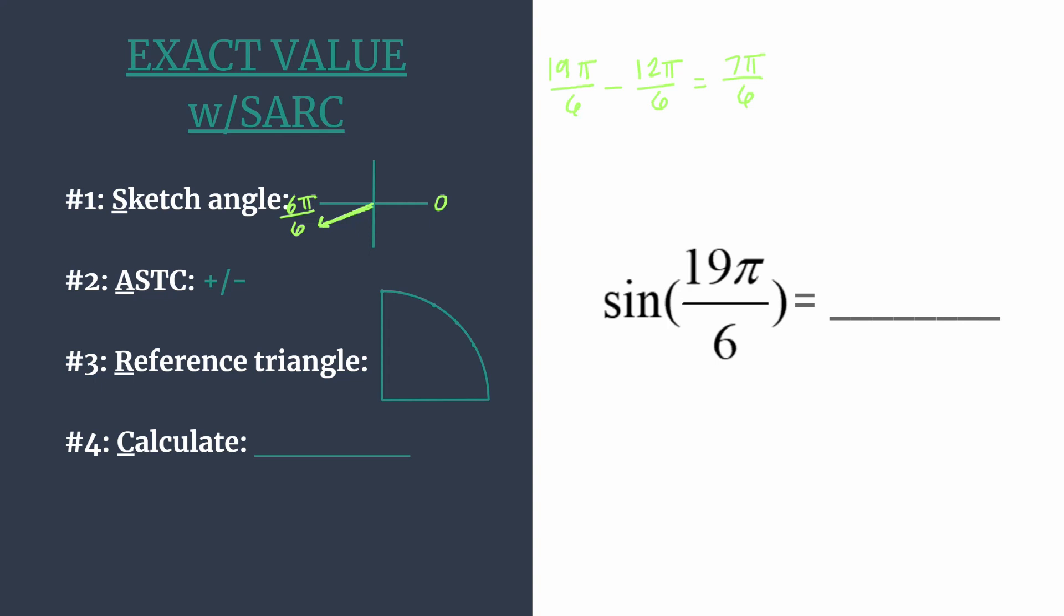Think ASTC, or all students take classes, and that will help you working from quadrant 1 around in a counterclockwise direction to know which trig functions are positive in each quadrant. So they're all positive in quadrant 1,